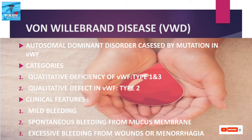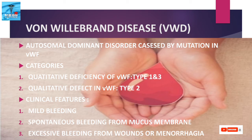Von Willebrand disease is an autosomal dominant disorder caused by mutation in the Von Willebrand factor gene. It is categorized into types based on quantitative or qualitative deficiency of Von Willebrand factor. Decreased circulating Von Willebrand factor is observed in quantitative deficiency. Type 1 is autosomal dominant and type 2 accounts for 25% of cases with several subtypes.